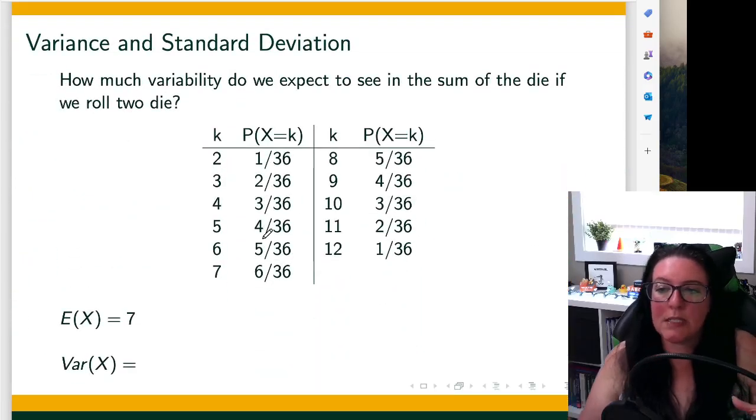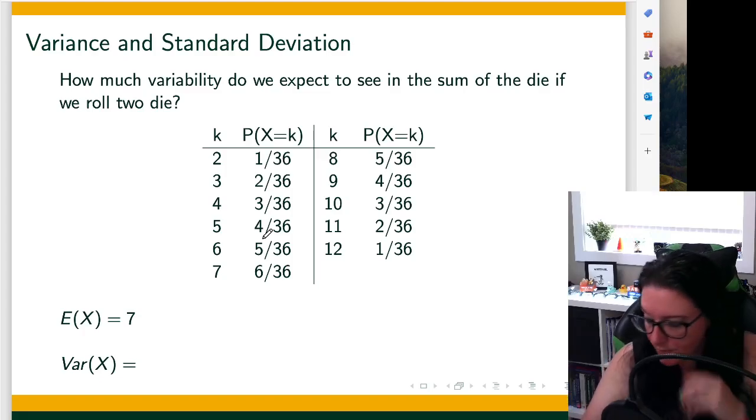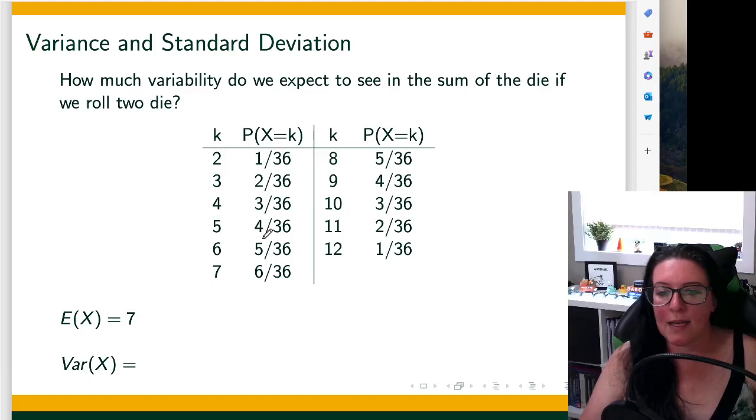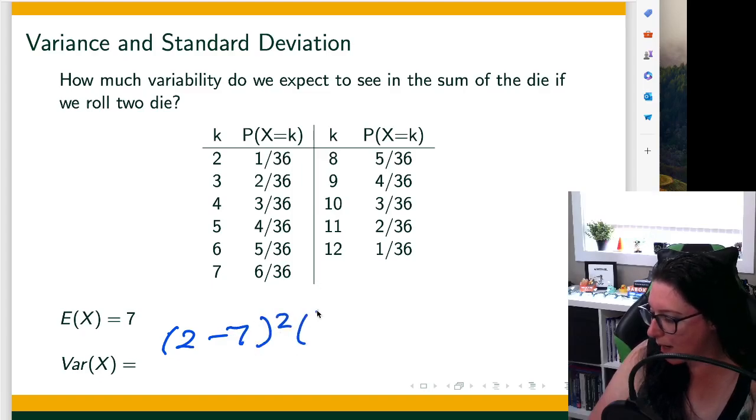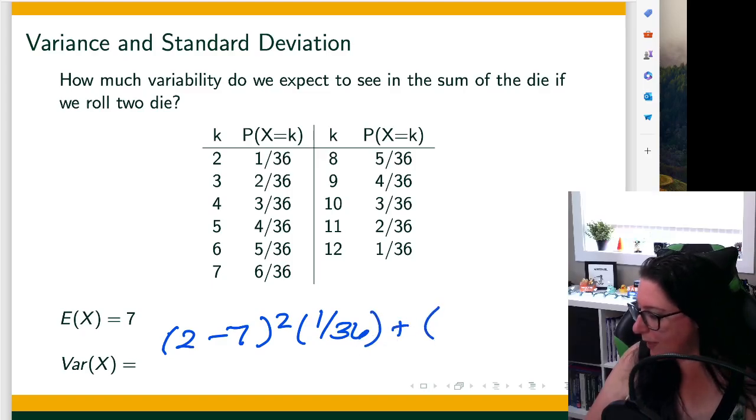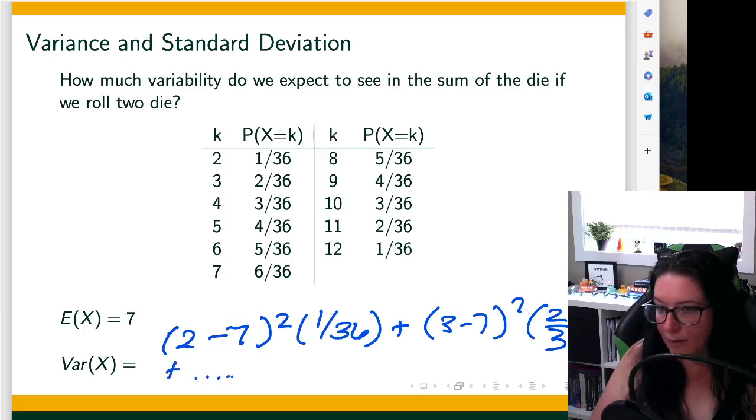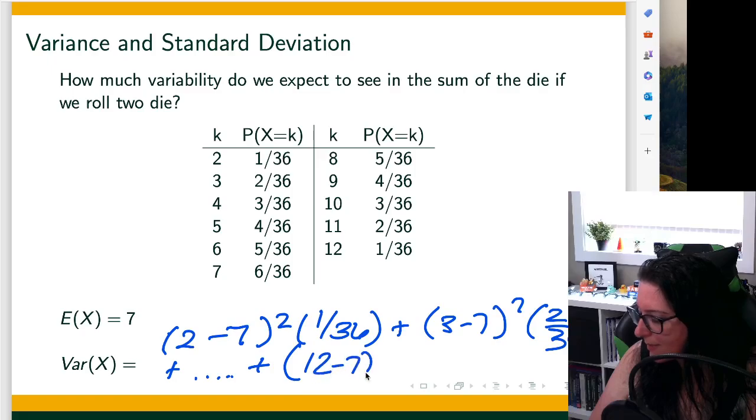If we have our 36 rolls of two pairs of six-sided dice, we could find the variance. How would that work? What we would do is we would take our outcome here of 2 minus the expected value of 7, square it times 1 over 36, plus, and then we repeat this here. This is for 3 minus 7 squared times 2 over 36. Keep going all the way until we get 12 minus 7 squared times 1 over 36.